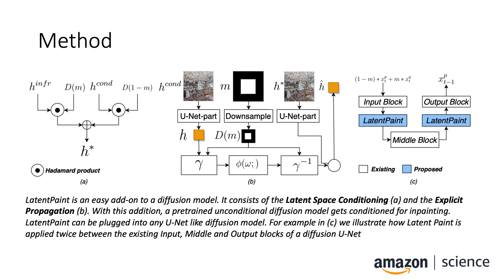We argue there is a better way. More specifically, we propose Latent Paint, an approach that does not require expensive training, yet it is fast at inference time. To solve this problem, we perform the forward-backward fusion step on a latent space rather than the image space, as you can see on the left. This is solved with a newly proposed propagation module in the diffusion process, depicted in the middle. Latent Paint requires minimal training and can be plugged into any U-Net-like diffusion model, as shown on the right.